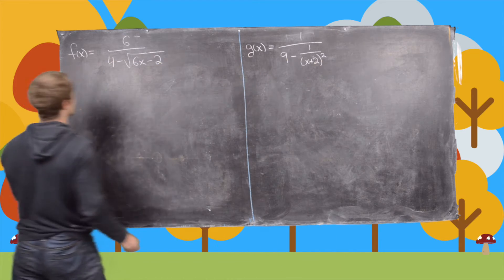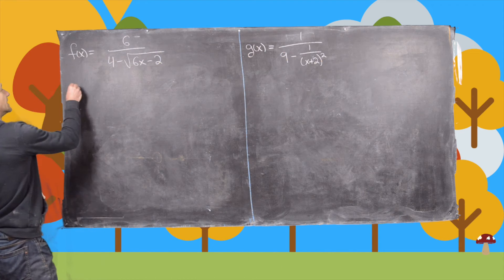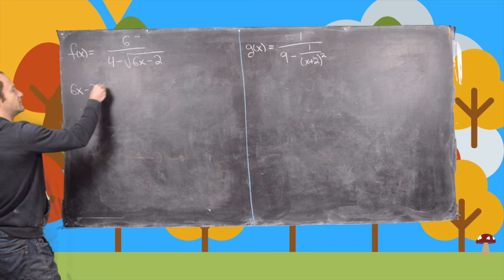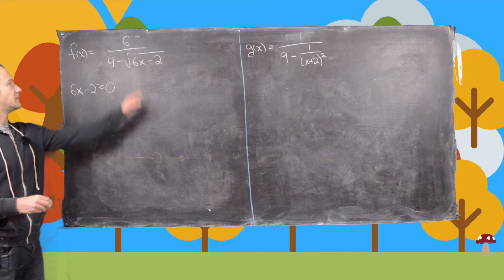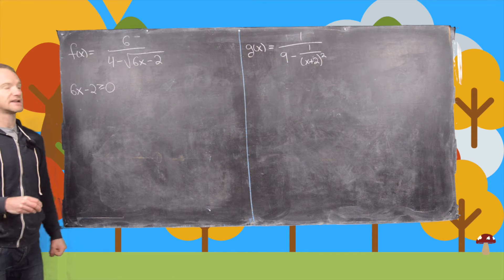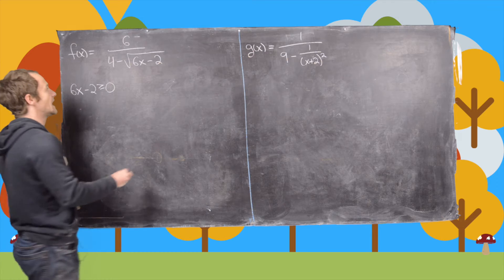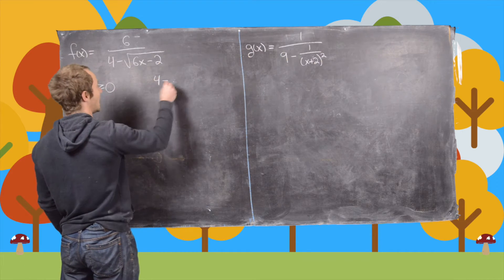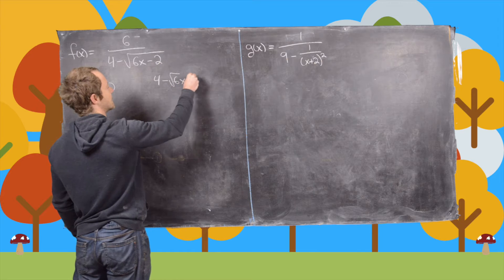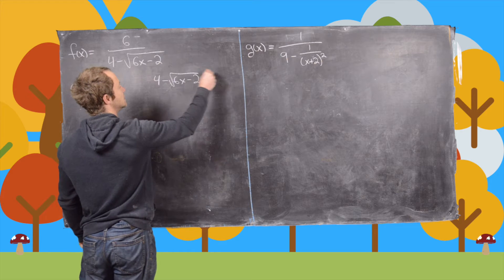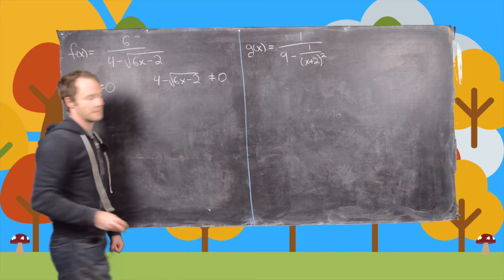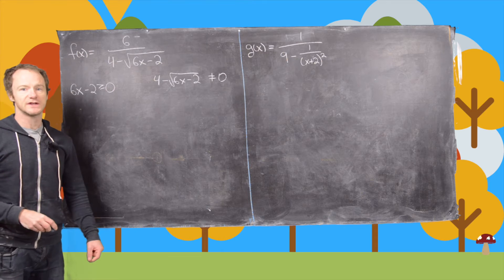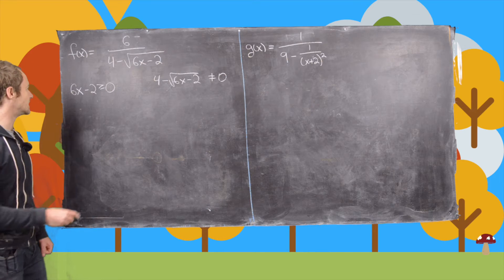In this case, we're going to need 6x minus 2 to be bigger than or equal to 0, because 6x minus 2 is under a square root. And we're going to need 4 minus the square root of 6x minus 2 to be not equal to 0. So now let's work on these two conditions to come up with the domain.